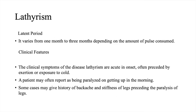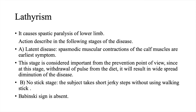Latent period varies from one month to three months depending on the amount of pulse consumed. Clinical Features: The clinical symptoms of lathyrism are acute in onset, often preceded by exhaustion or exposure to cold. A patient may often report being paralyzed on getting up in the morning. Some cases may give history of backache and stiffness of legs preceding the paralysis of legs. It causes spastic paralysis of lower limbs. The first stage is the latent stage — spasmodic muscular contractions of the calf muscles are the earliest symptom. This stage is considered important from the prevention point of view since withdrawal of pulse from the diet at this stage will result in diminution of the disease.